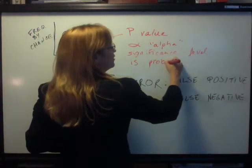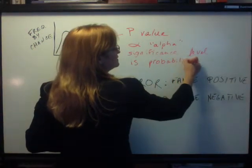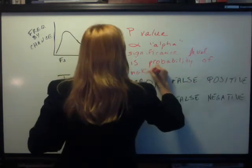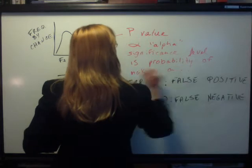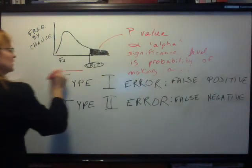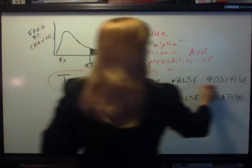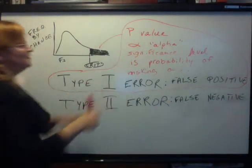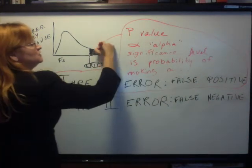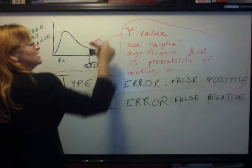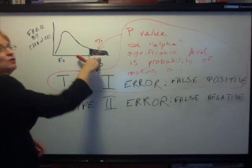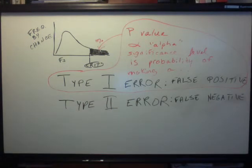Type 1 error. A false positive. And this P value is this percent. It's the percent of statistics that would happen in this region anyway regardless even if there's no effect.